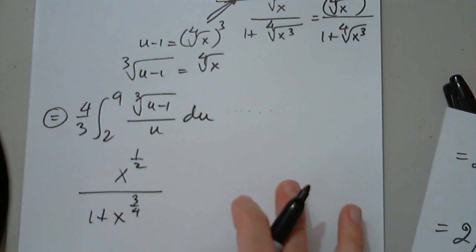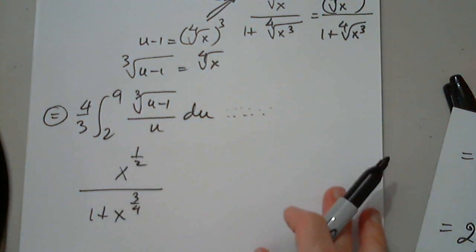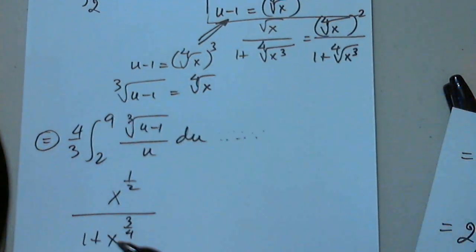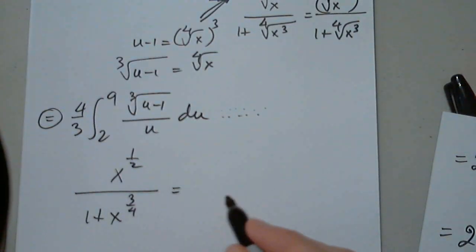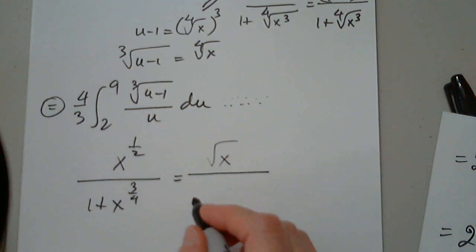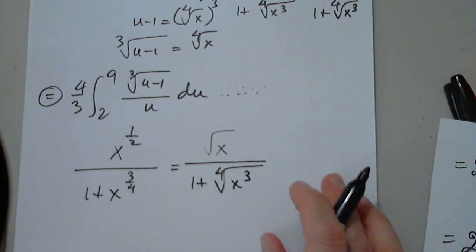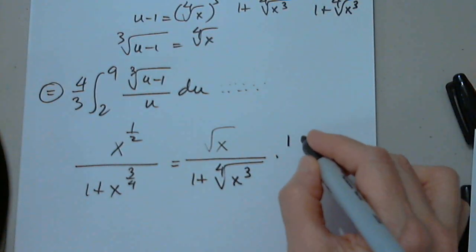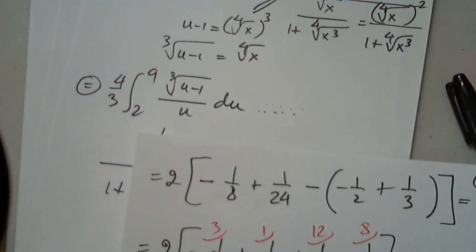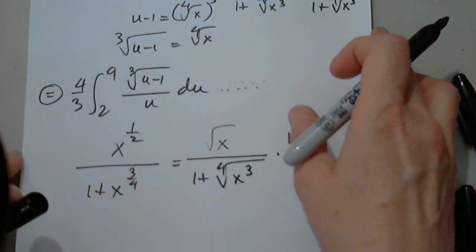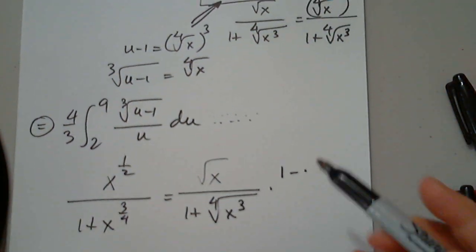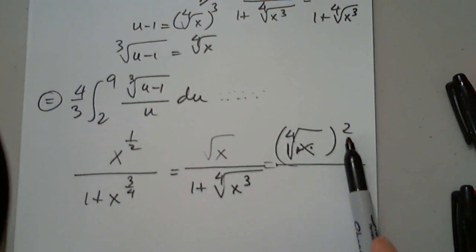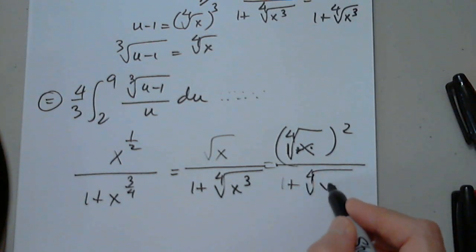So I have to simplify the function — it's the square root of x over one plus the fourth root of x to the third. I managed to change it entirely from x to u but this function is not helping. The fourth root of x squared is the same thing as the square root of x, and this is one plus the fourth root of x to the third.